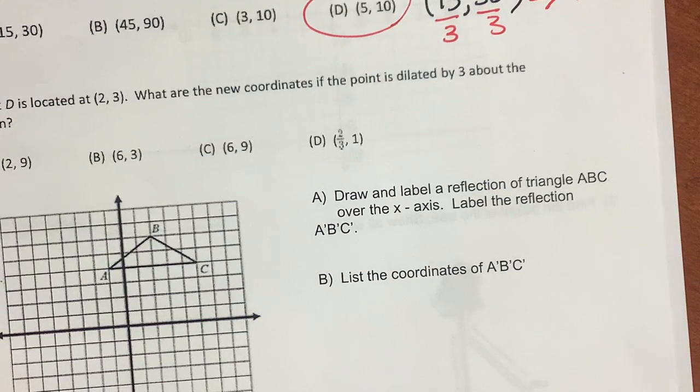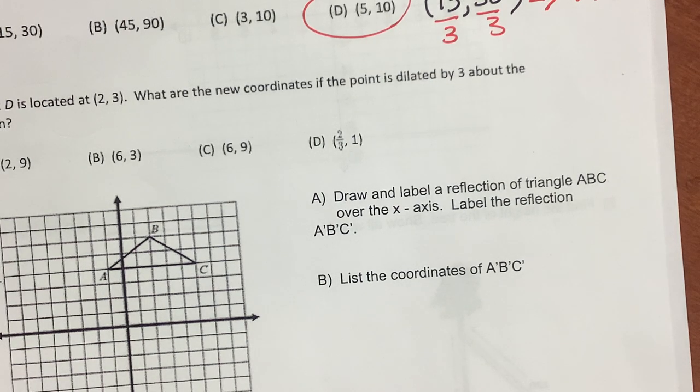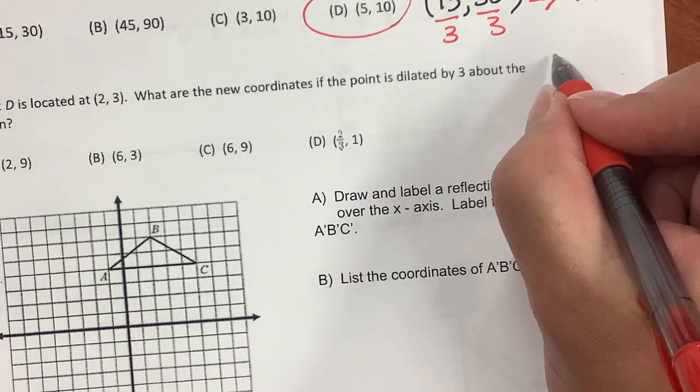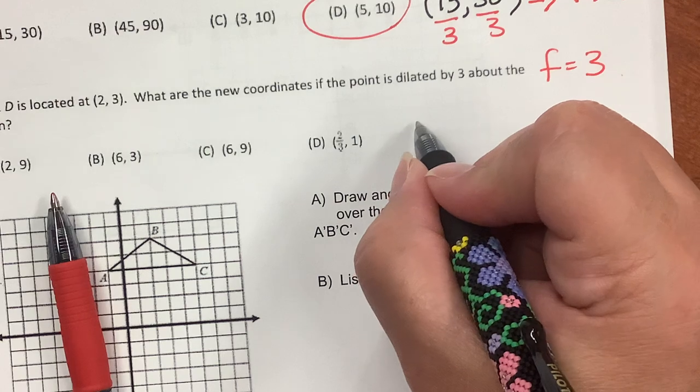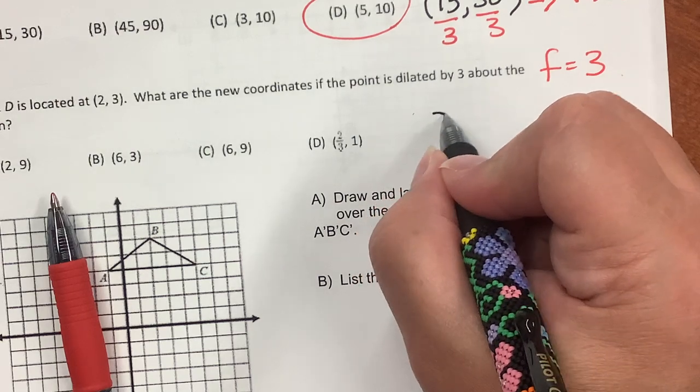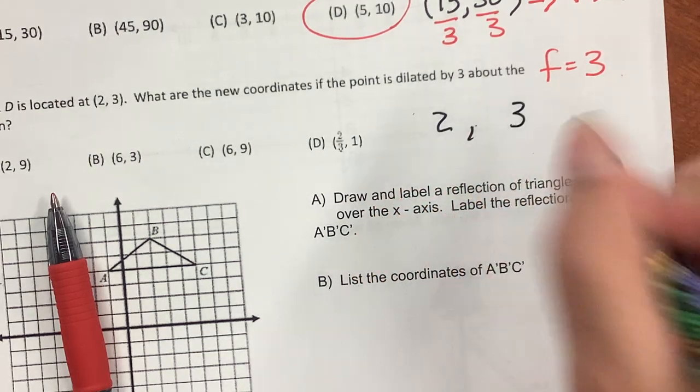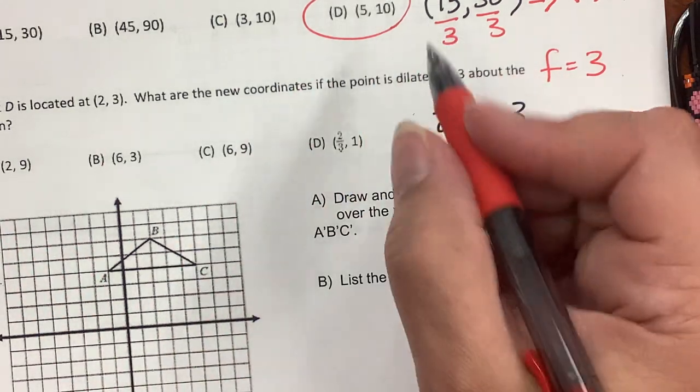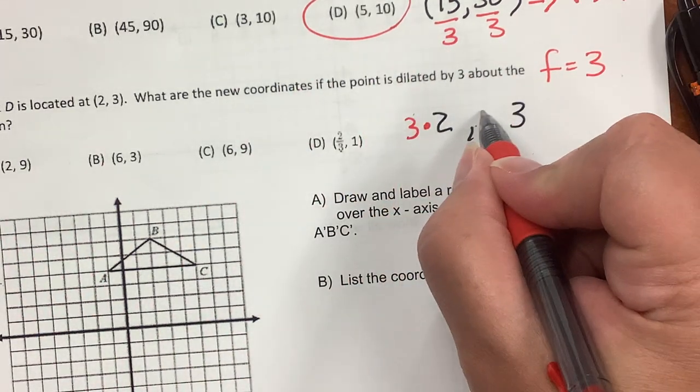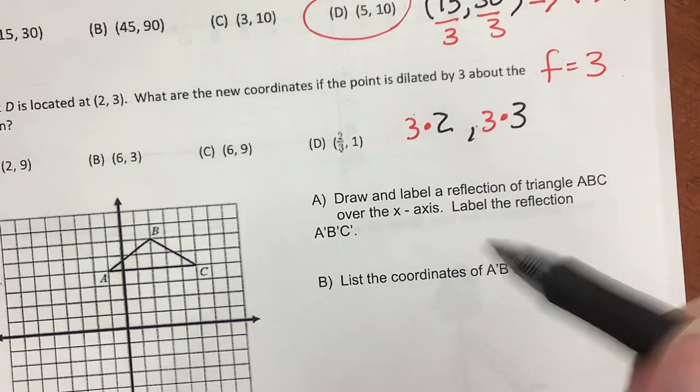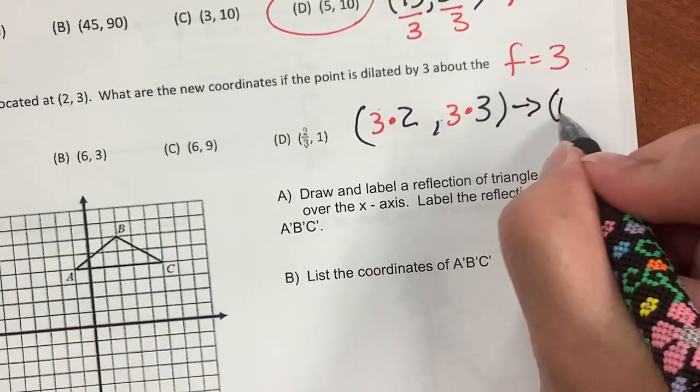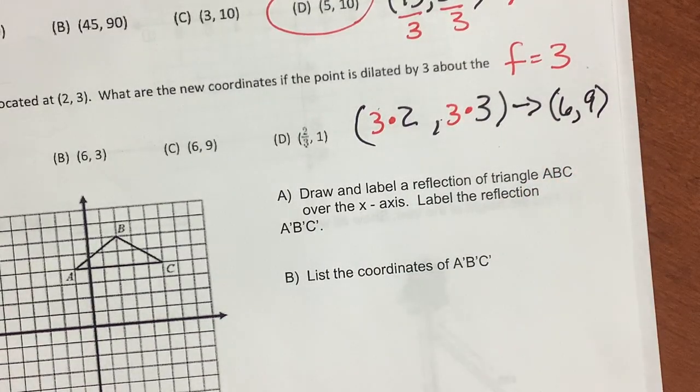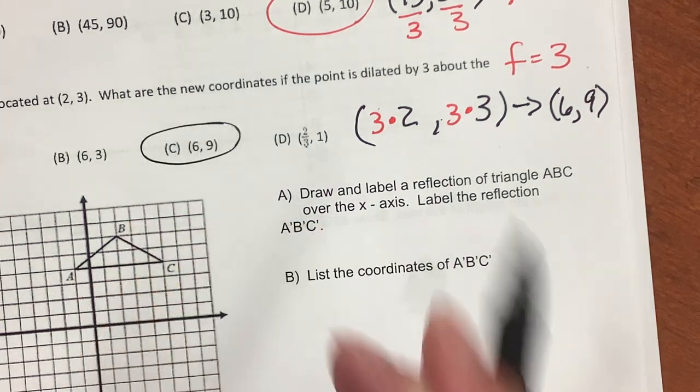Point D is located at 2, 3. What are the coordinates if it's dilated by 3? My scale factor is 3. Now instead of dividing by 3, I have to multiply by 3. So I have these points 2 and 3, and I'm going to multiply both of them. 3 times 2 and 3 times 3 - multiply everything by the scale factor, and I get 6, 9. That's C.